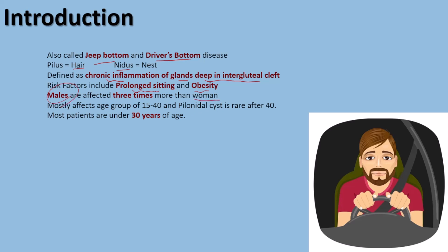Males are affected three times more than women, making this a male-dominant disease. The mean age of onset is between 15 and 40 years; after age 40 it is very uncommon, and most patients who suffer from this disease are under the age of 30.